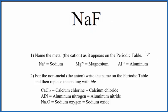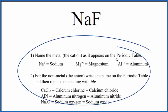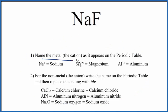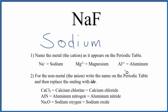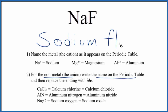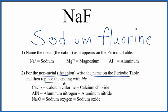For binary ionic compounds, we use these rules here. We first name the metal — that's the sodium — as it appears on the periodic table, so sodium is just sodium. Then for the nonmetal, the fluorine, we write the name as it appears on the periodic table, but we replace the ending with -ide. So instead of -ine, we have -ide.